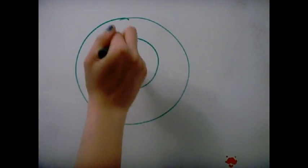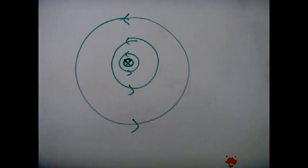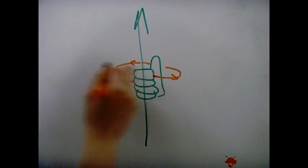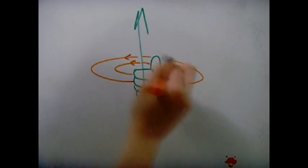Current flowing in a wire produces a magnetic field. Use the right hand grip method to find out the direction of the field lines or current.